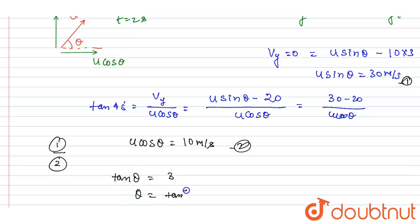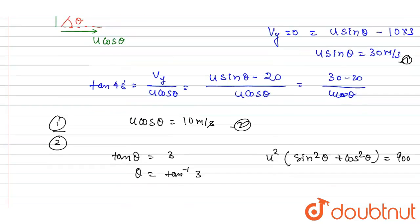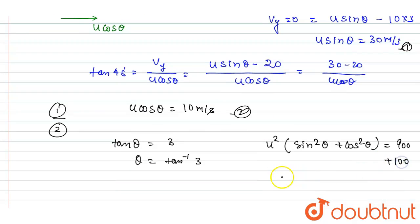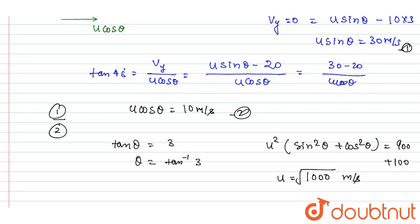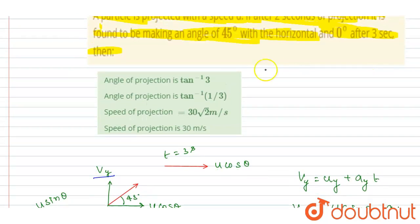Angle of projection is this. And if I talk about the velocity of projection, square the two and add them: u squared sin squared theta, u squared cos squared theta plus, it will be 900 plus 100, that is 1000. So from here you will get u equals root 1000, that is, this will be the velocity of projection, that is root 1000, that is 10 root 10.